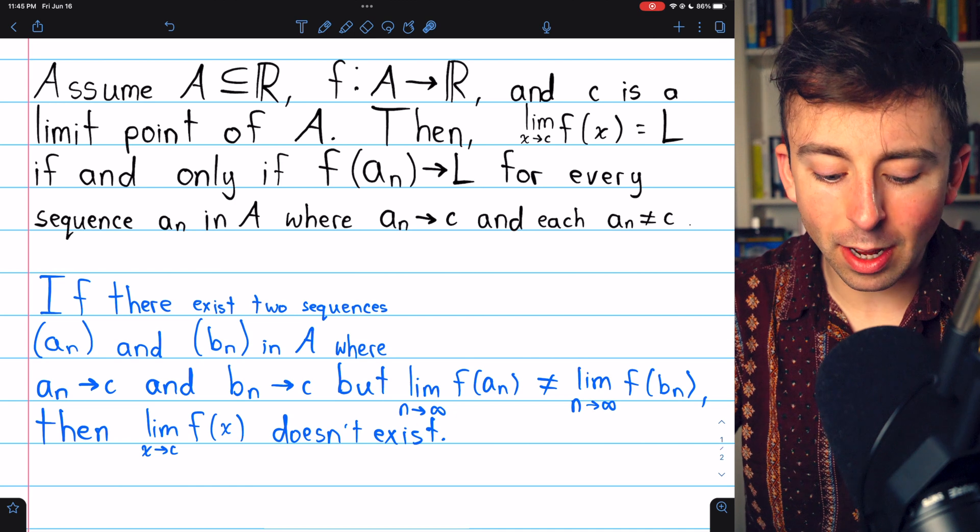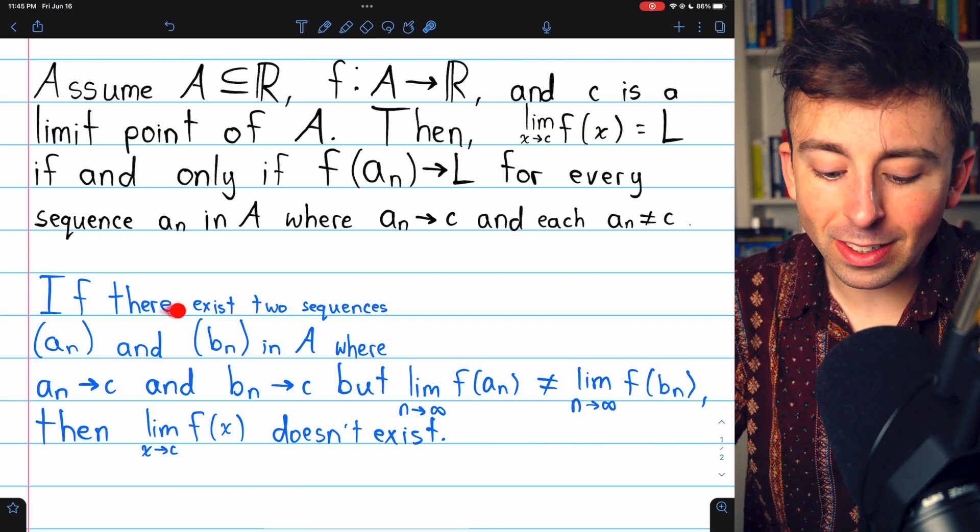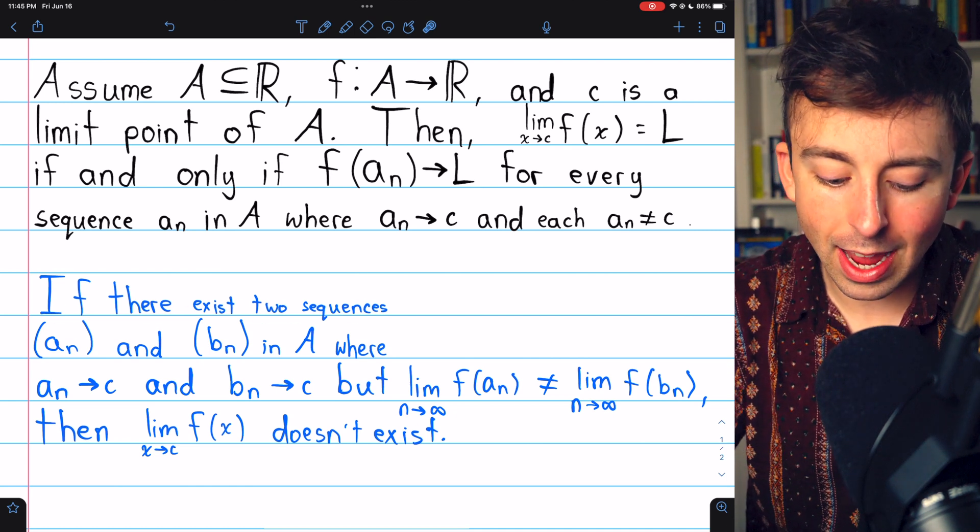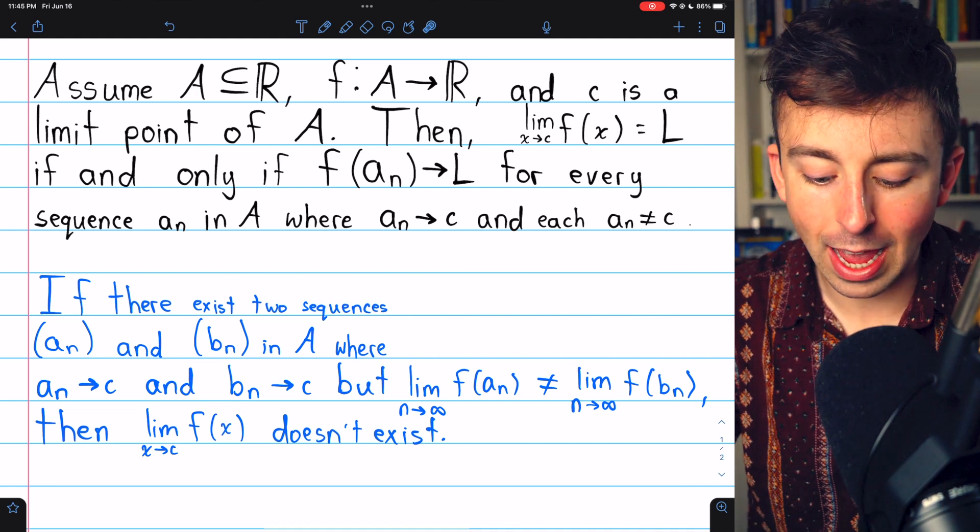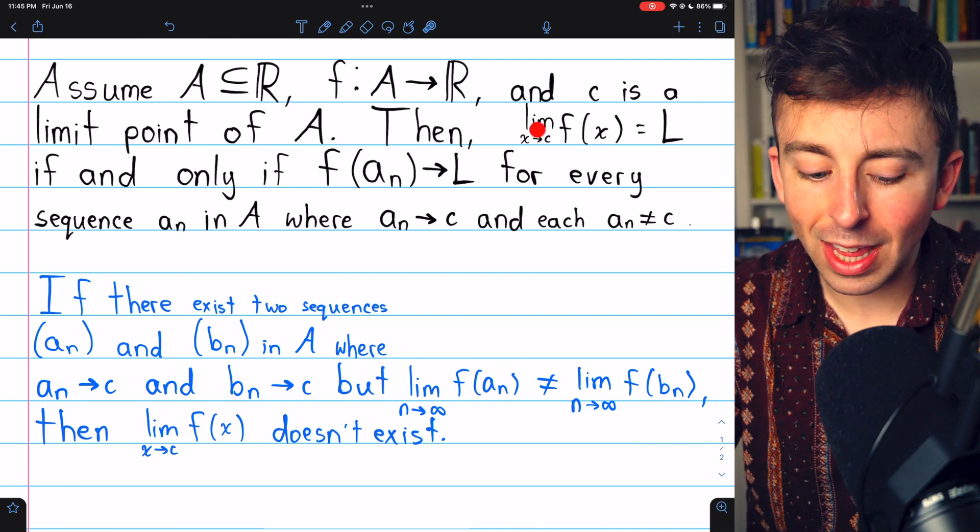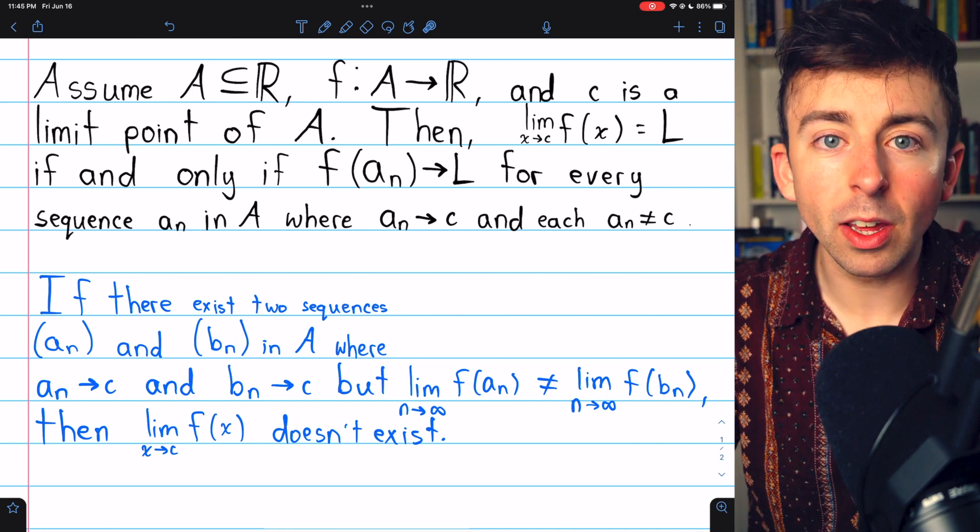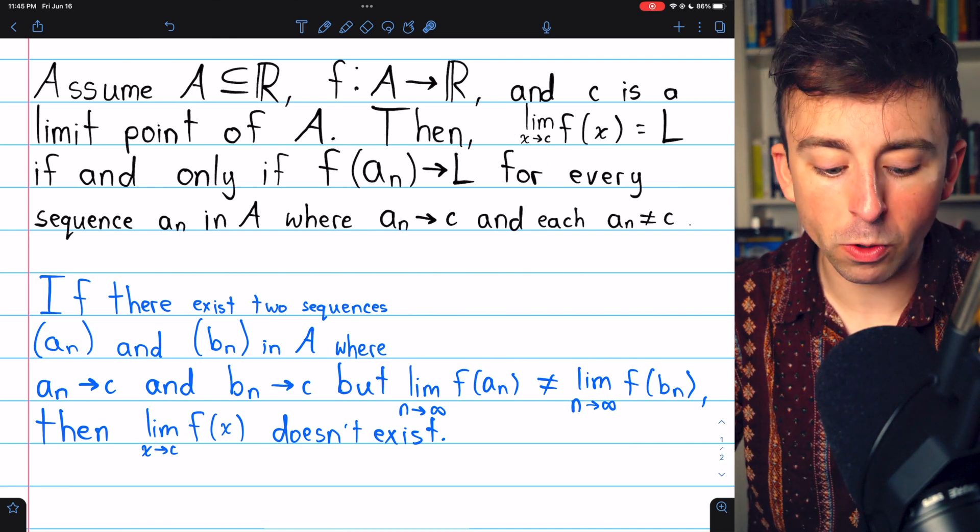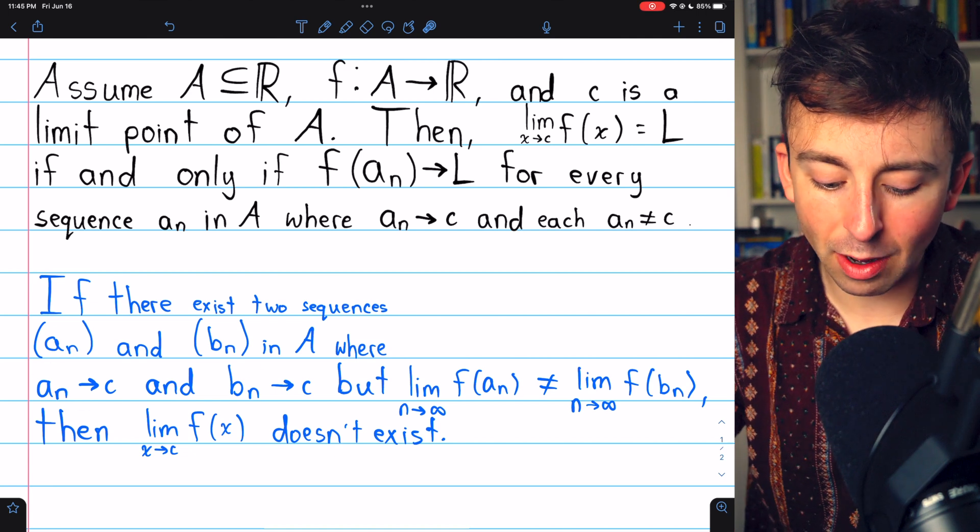So the contrapositive is this: If there exist two sequences aₙ and bₙ in the function's domain A, where aₙ and bₙ both converge to that limit point c, that point that we're trying to let x approach, if both sequences converge to c,